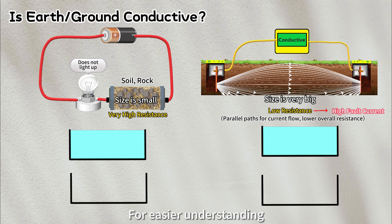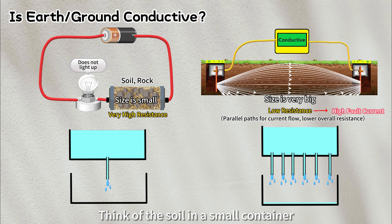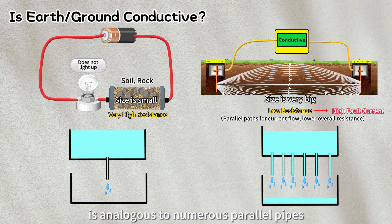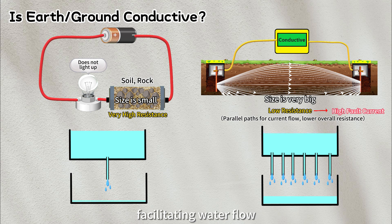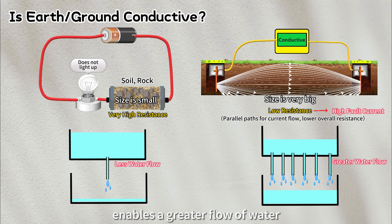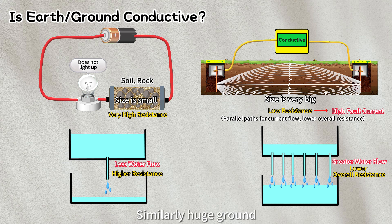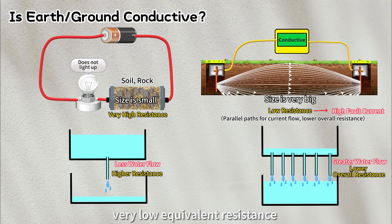For easier understanding, let's draw an analogy using the transfer of water between two tanks. Think of the soil in a small container as a single pathway for water flow, while the huge ground is analogous to numerous parallel pipes facilitating water flow. Consequently, you'll observe that having more parallel paths enables a greater flow of water, significantly reducing the overall resistance to water movement. Similarly, huge ground with countless parallel paths can result in very low equivalent resistance for fault current to flow.